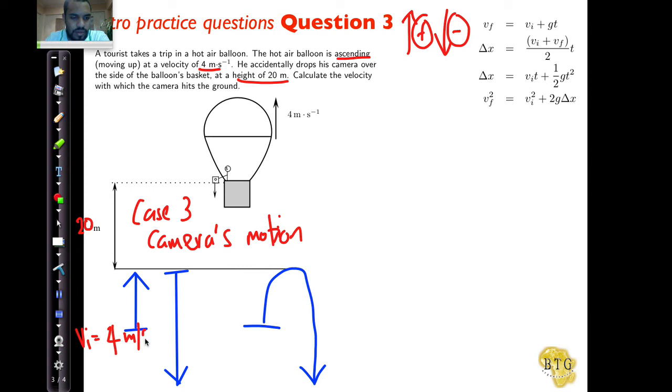V initial is four meters per second upwards. V final over here equals zero, and V initial over here equals zero because at its highest point it has zero velocity. Our final velocity is going to be a negative value, but we don't know the value itself. We have little g, minus nine point eight meters per second squared. We have time, but we don't have delta x in this case.